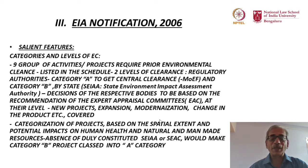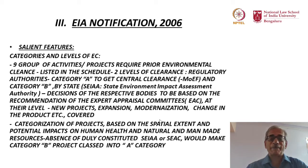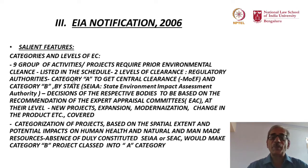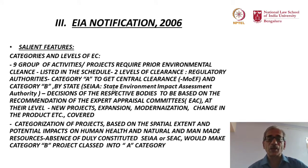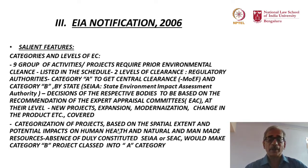Environmental clearances are going to take place at two levels: one at the state level and another at the central level. Those put under Category A require central clearance — that is, the Ministry of Environment and Forests clearance. Those put under Category B are to be cleared by the state governments. The agency carrying out impact assessment at the central level is referred to as the Environment Appraisal Committee (EAC), and at the state level it is called the State Environment Impact Assessment Authority (SEIAA). These bodies take the call at their respective levels for that particular category of developmental activity and then make a decision.